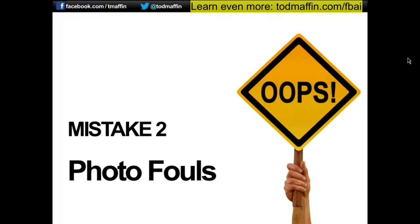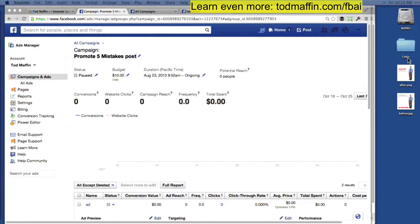On to mistake number two — mistakes you're making with your photographs. People like to put photographs in their ads, and it's important to do because it generates engagement. But if you've got, say, a restaurant, I see this all the time — restaurants will put an ad of, for instance, a Caesar salad. That's no good. We want something that really resonates with people. So here is the perfect Facebook ad.